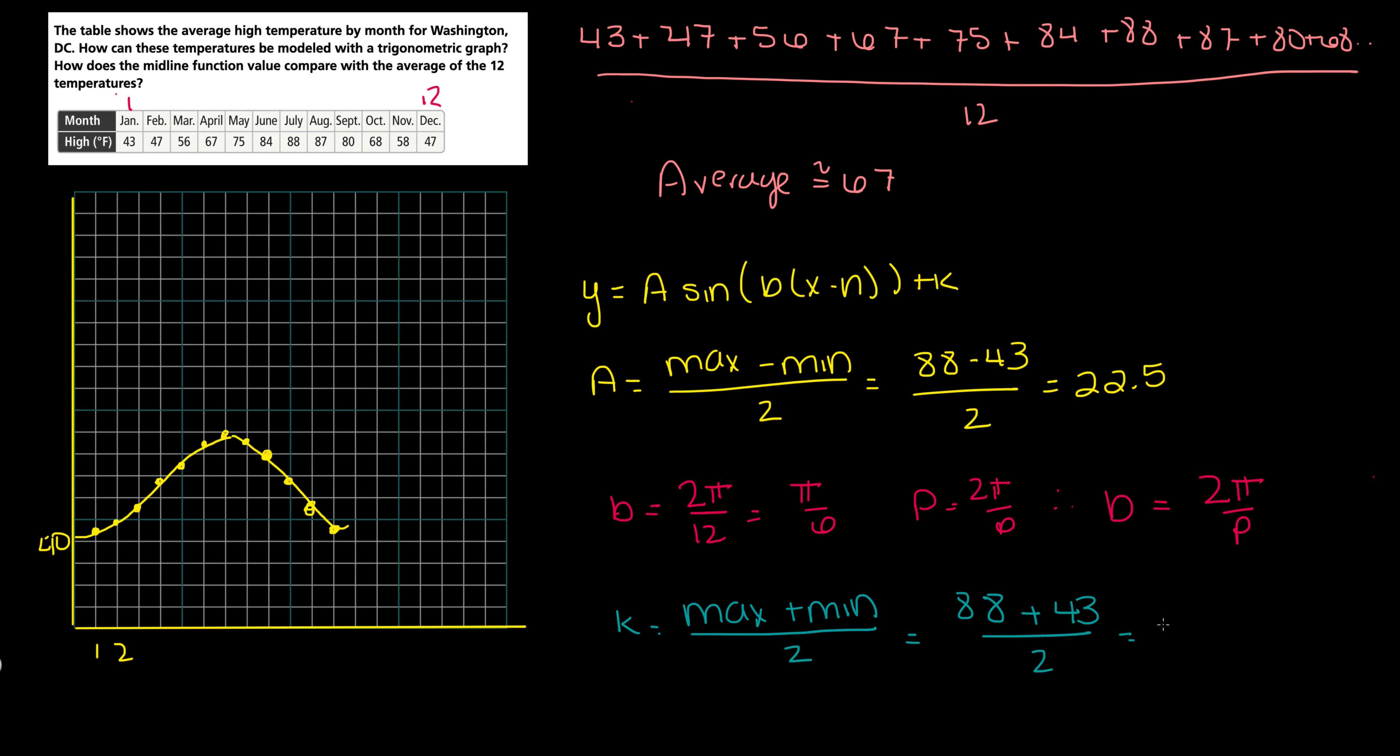Or 88 plus 43 divided by 2, and we get something on the lines of 65.5. Looking at that, we are 40, 50, 60, we're about here.